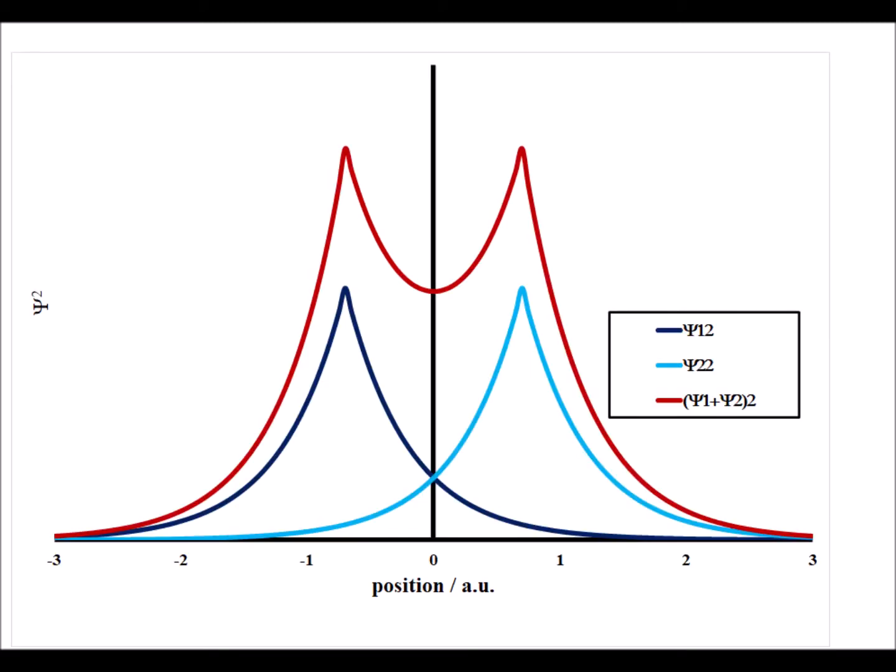A convenient way to think about bonding is in terms of the probability densities for the electron. Here we have the probability densities in dark blue and light blue for the hydrogen 1s orbitals — the radial parts at least. We see the probability density for the sigma bonding linear combination, and we note a large increase in the electron density between the two nuclei at minus 0.6 and plus 0.6. That has the effect of stabilizing the molecule.